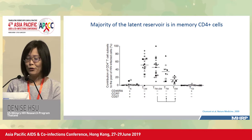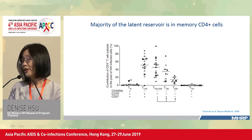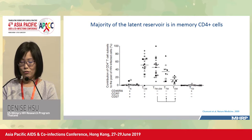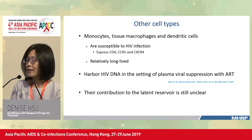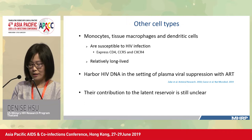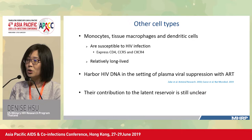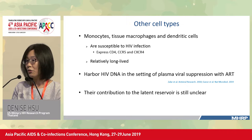The majority of the latent reservoir is in the memory CD4 T cell population, accounting for over 90% of the cellular reservoir. There has been a lot of interest in other cell types including monocytes, tissue macrophages, and dendritic cells, because these cells are also susceptible to HIV infection — they express CD4 and co-receptors and are very long-lived.